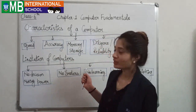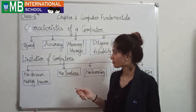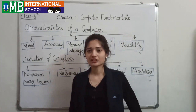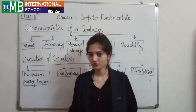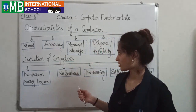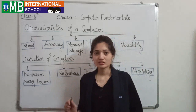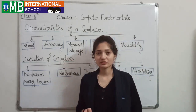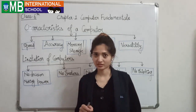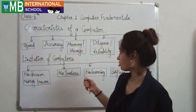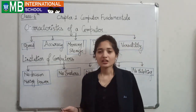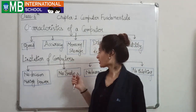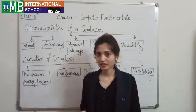Now, characteristics of a computer. First is speed — a computer works very fast and gives you the result in a nanosecond. Second is accuracy — accuracy means the computer gives you the result with 100% correctness. Third is memory storage — a computer can store a huge amount of data.